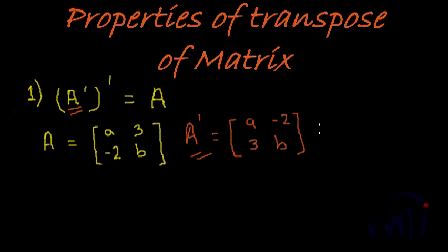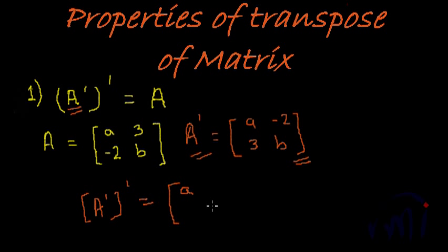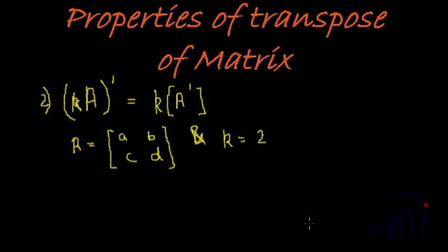Now if we take the transpose of A', we take this matrix and transpose it once again — keeping the diagonal elements the same and flipping the two non-diagonal elements, -2 and 3. What we get is the original matrix we started with. Hence, the transpose of A' will be A itself. This is the first property.